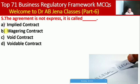Next MCQ: when an agreement is not expressed, what type of contract is it? Whether implied contract, wagering contract, void contract, or voidable contract. Here A is the right option — it is an implied contract.